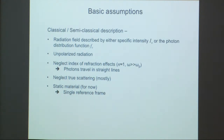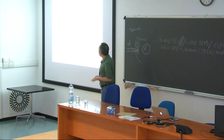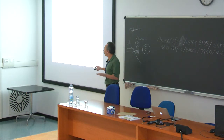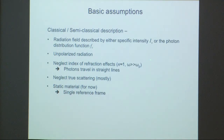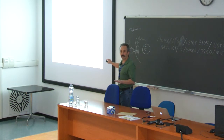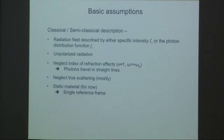First, basic assumptions — how we're going to describe the radiation. This is a classical slash semi-classical description. We'll be talking about a radiation field described either in terms of the specific intensity, or we'll talk about the photon distribution function. These two will have exactly the same information. For simplicity, we'll make the assumption that we're talking about unpolarized radiation. We're going to neglect, for right now, index of refraction effects, which means we assume the index of refraction is one. Photons will travel in straight lines.